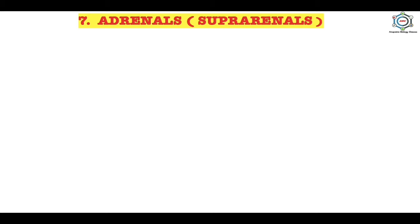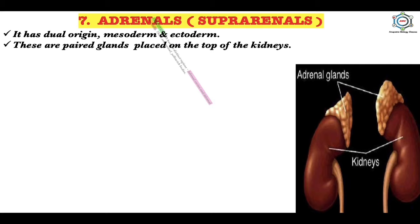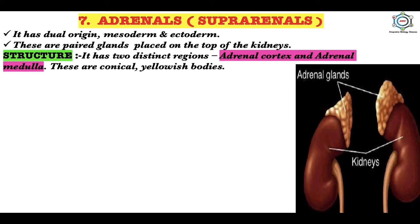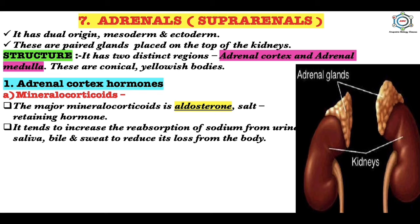The adrenal glands are also called suprarenals. They have a dual origin — mesodermal and ectodermal. These are paired glands placed on top of the kidneys. According to their structure, each adrenal gland has two distinct regions: the adrenal cortex and adrenal medulla — conical yellowish bodies. The adrenal cortex has three regions: outer, middle, and inner.